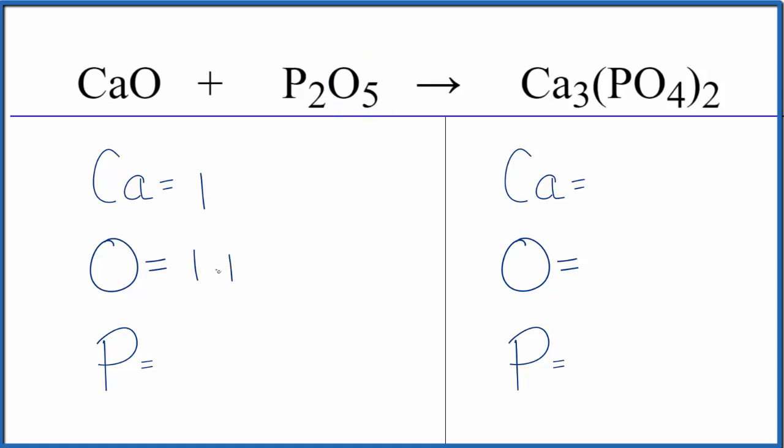So we have those six total oxygen atoms, two of these phosphorus atoms. Product side we have three calciums. This two here, this goes to everything, so two times four, eight oxygens. Two times the one, that's two phosphorus atoms.